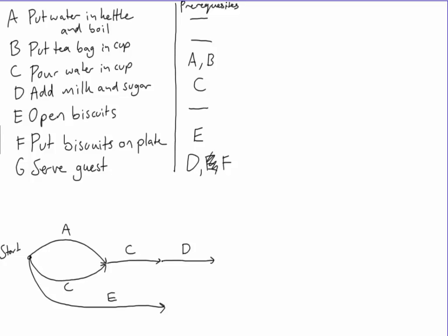Now, D and F both are required for serving the guest, which is G. So F is going to have to come up to join that one. And then we've got G across here. And that leads us to a finish point. Okay, so that's how I would draw a precedence network.